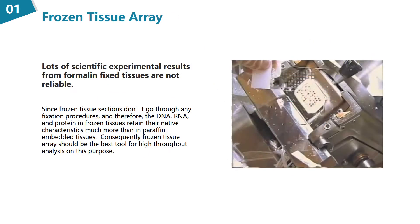Though most arrays can be easily made by microarraying instruments, paraffin-embedded tissues have limitations. Buffered formalin solutions cross-link proteins and nucleic acids when used for fixed tissues, and the DNA, RNA, and protein within the tissues are damaged at various levels during fixation. Therefore, many experimental results from formalin-fixed tissues are not reliable. Since frozen tissue sections don't go through any fixation procedures, the DNA, RNA, and protein in frozen tissues retain their native characteristics much more than in paraffin-embedded tissues. Consequently, frozen tissue arrays should be the best tool for high-throughput analysis.